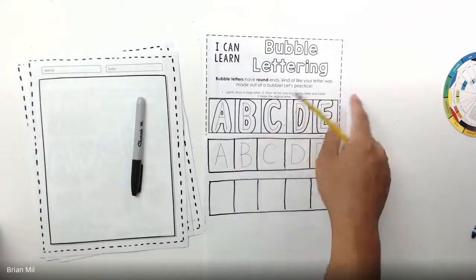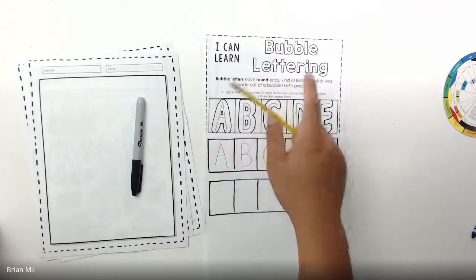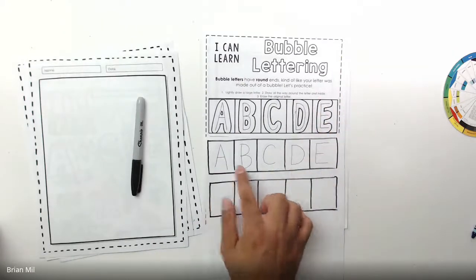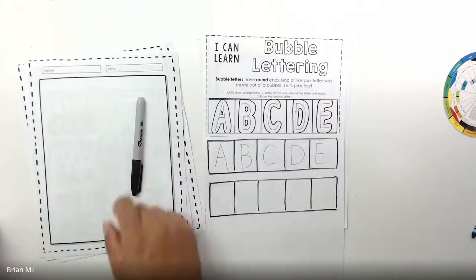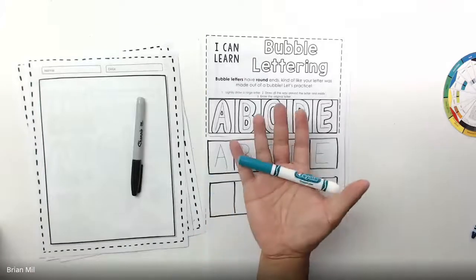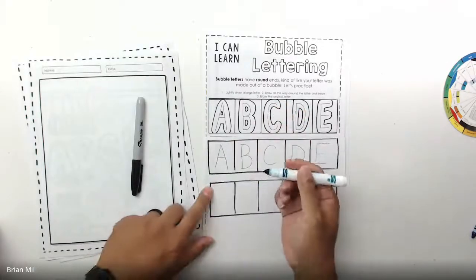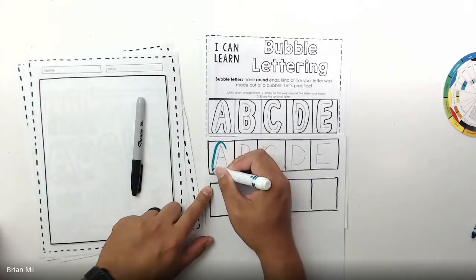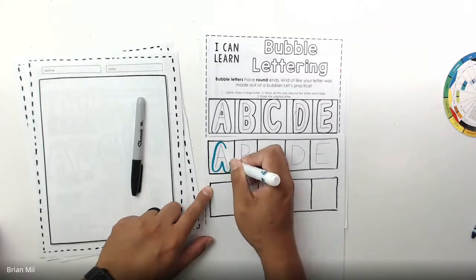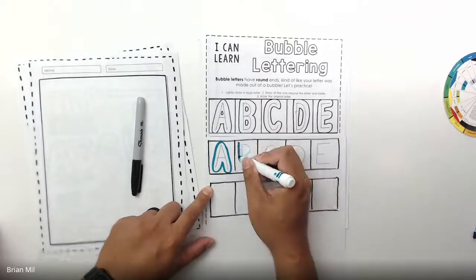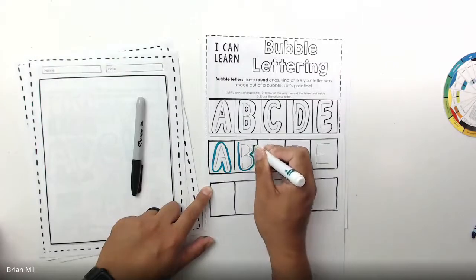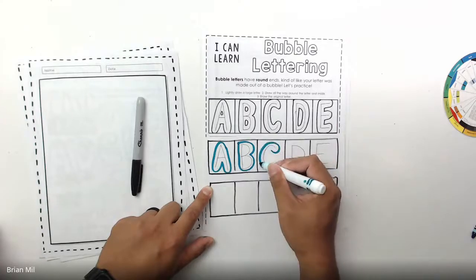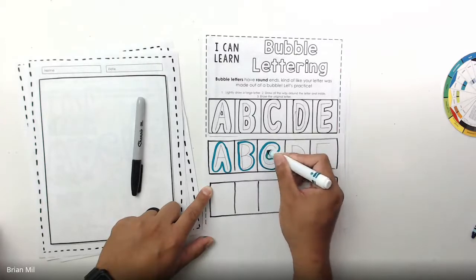Step two says draw all the way around the letter and inside, making sure you have rounded ends. I'm going to use a random marker and outline every single one of these letters with round ends. Here's a round end on the A — a second and a third. Then the B with round corners, the C with round corners, making sure I don't have any blocky corners.